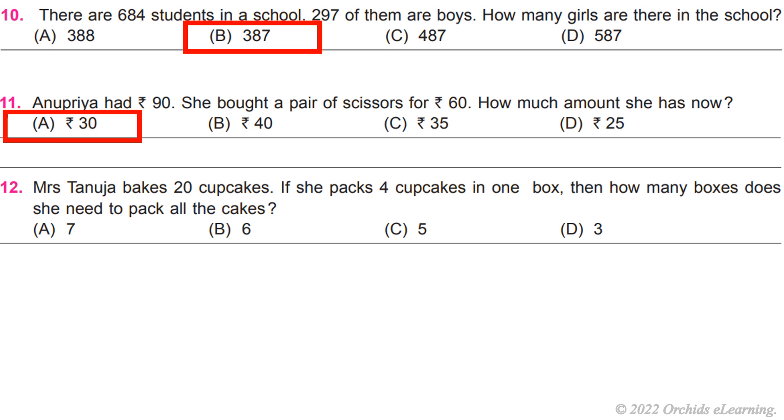Question 12: Mrs. Tanuja bakes 20 cupcakes. If she packs 4 cupcakes in one box, then how many boxes does she need to pack all the cakes? C) 5.